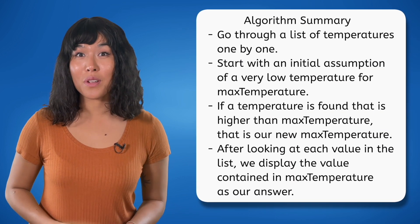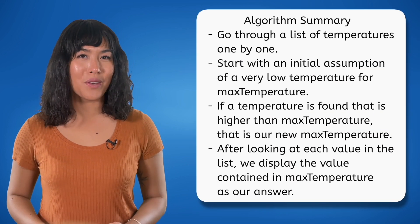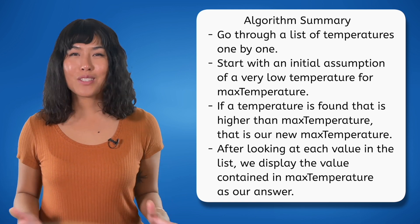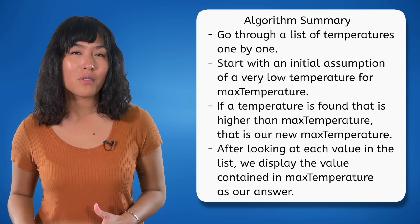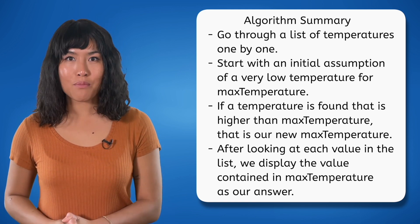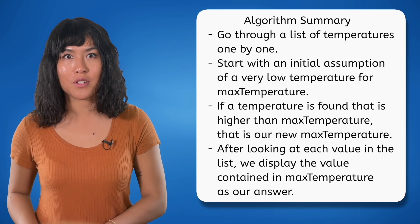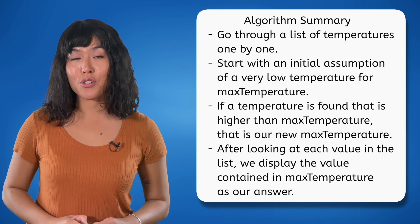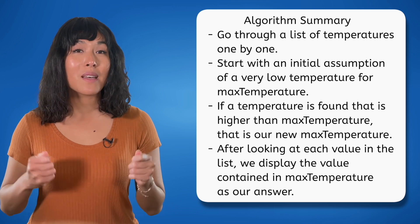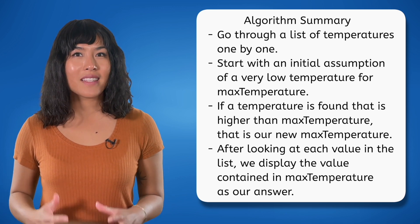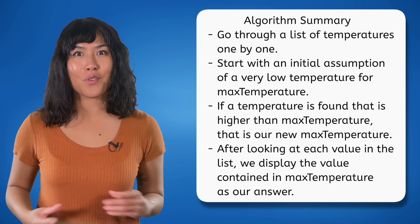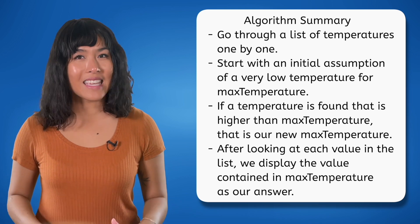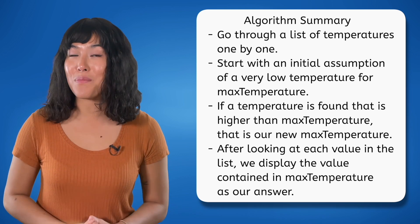Let's summarize our algorithm for finding the highest value within an array. This code goes through a list of temperatures, starts with an initial assumption of a very low temperature for max temperature. And as it checks each temperature in the list, it updates max temperature if it finds a temperature higher than the current assumption. At the end, it tells us what the highest temperature is.